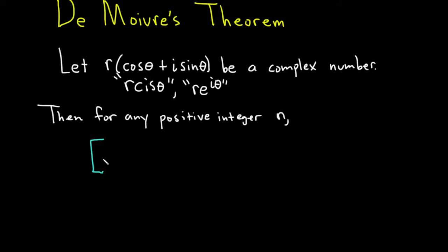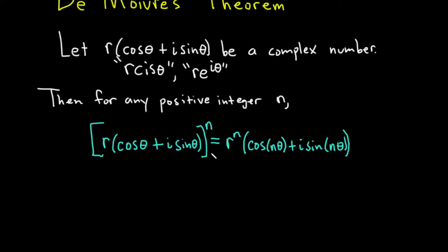The first one, I'll use a bracket here, bracket r cosine theta plus i sine theta to the nth power. You basically raise the r to the nth power, and then the n goes inside the trig functions like this: cosine of n theta plus i sine n theta. It's pretty cool. Really powerful theorem, I think. And we'll do an example in a minute. It's actually really simple to use.